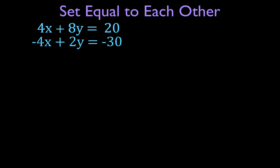Our second example. In the previous example both equations were already solved for y. In this case we have coefficients in front of all variables: 4x, 8x, minus 4, and 2. We don't have to solve for x or y — the easiest approach is to solve each equation for 4x, since we have 4x and minus 4x, and then set them equal to each other.